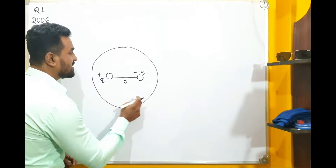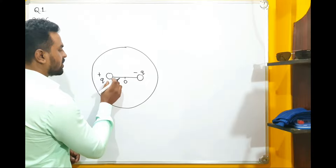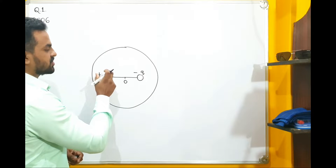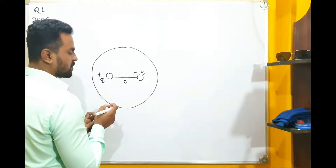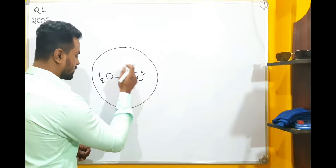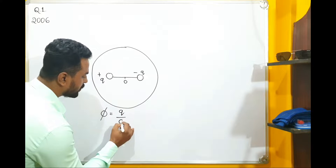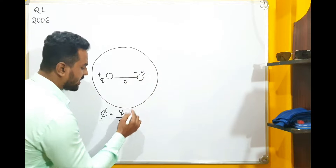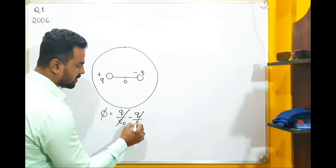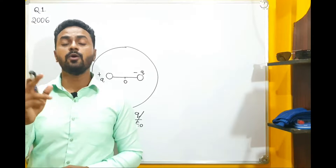The total flux due to this Gaussian sphere depends on the positive and negative charges. The flux due to the positive charge is +Q/ε₀ and the flux due to the negative charge is −Q/ε₀. Because of the opposite signs, these two terms cancel, giving φ equals zero. So the answer for this question is found in option A.